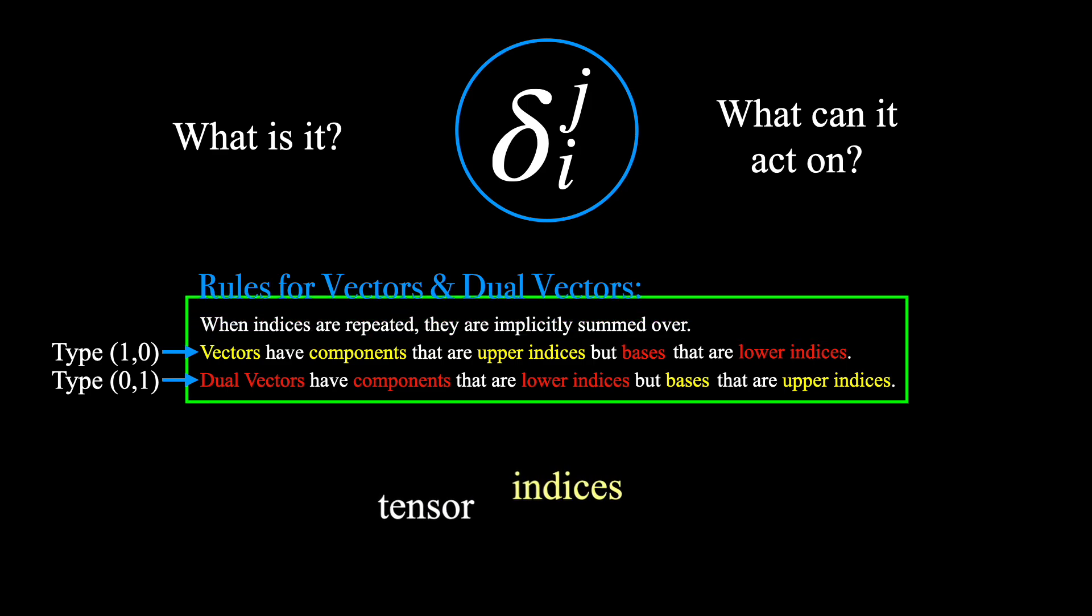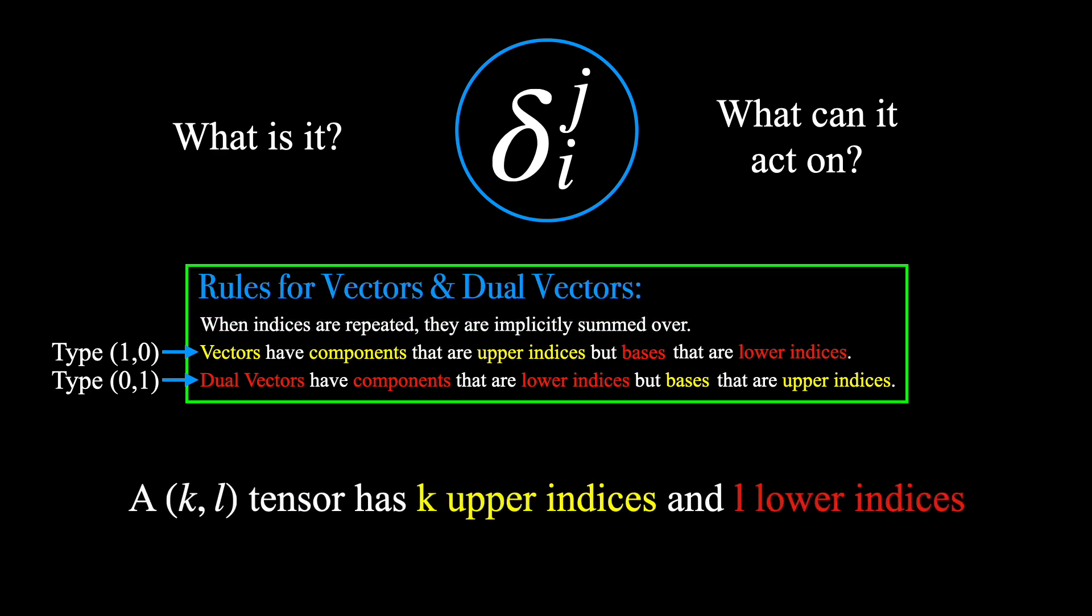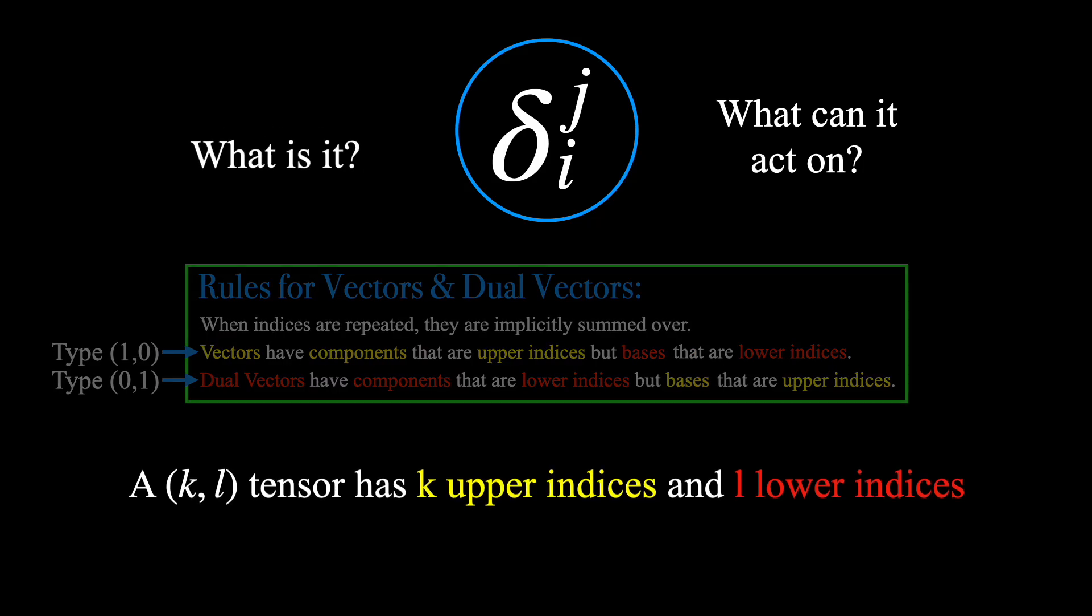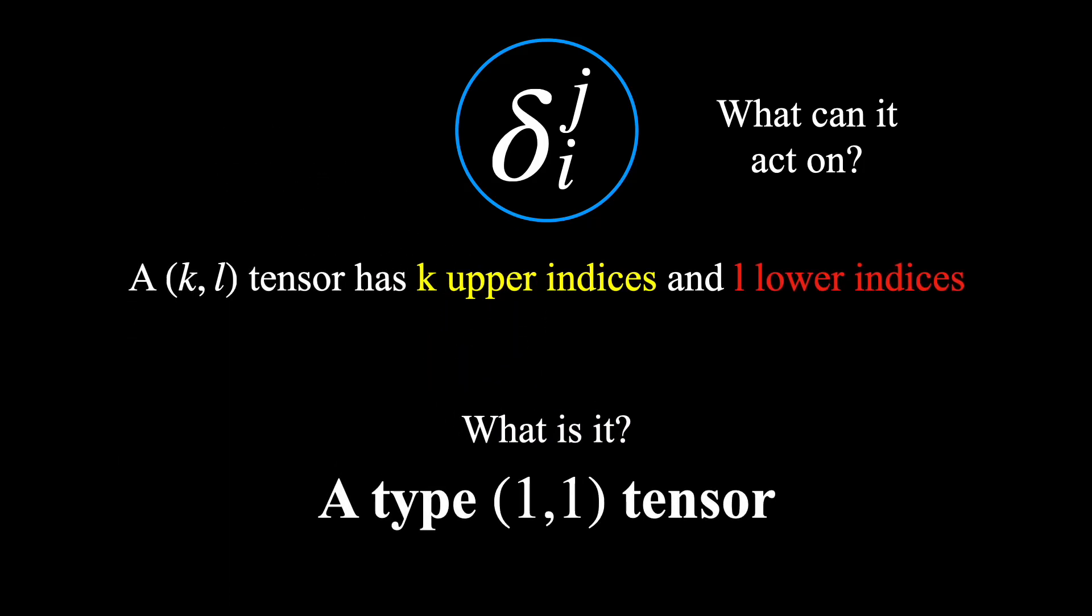So it's natural to ask, how then should indices for a general tensor be placed? For this, we will need to add one more rule to our list. This new rule states that a (K,L) tensor has K upper indices and L lower indices.